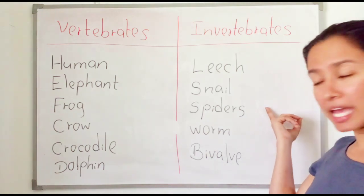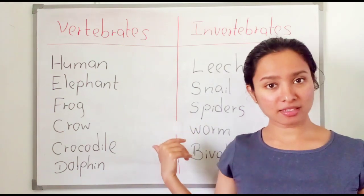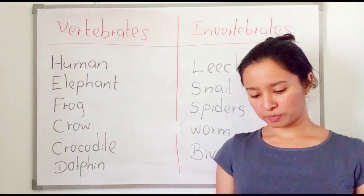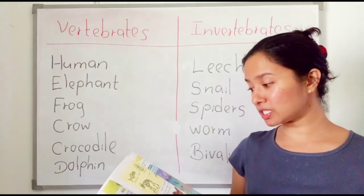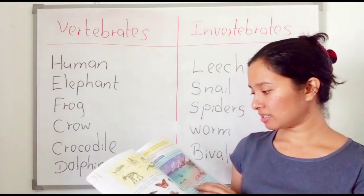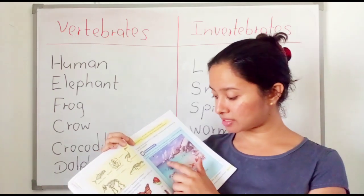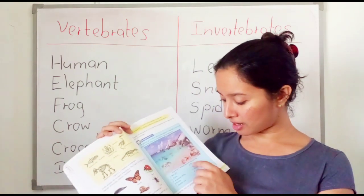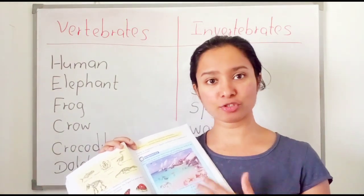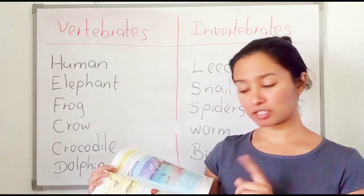Invertebrates are animals without a backbone; vertebrates are animals with a backbone. Now turn to page number 75, Assignment 6.2. There is a seashore with animals living there and in the sea. There are ten names of animals, and you have to divide them into two groups — vertebrates and invertebrates. You have to do this at home.